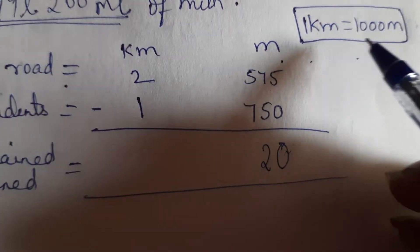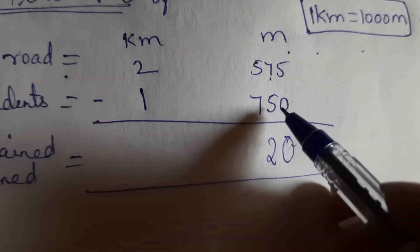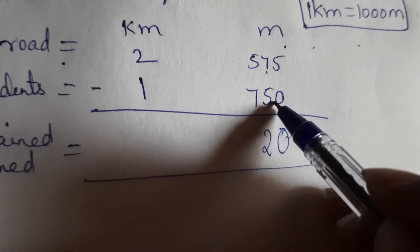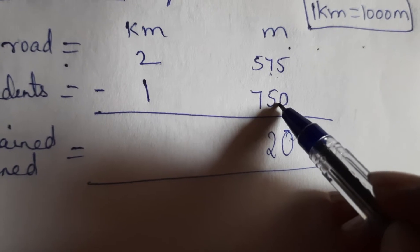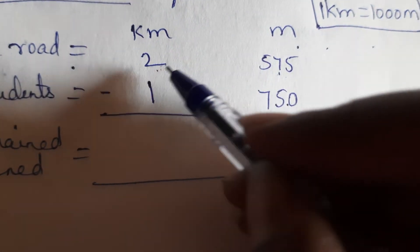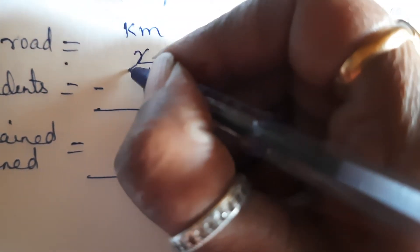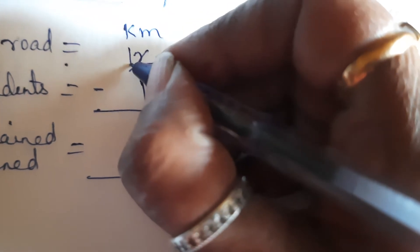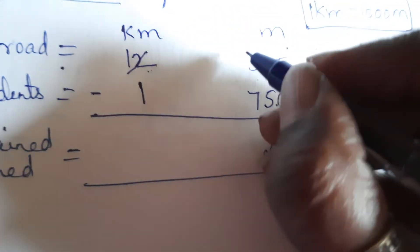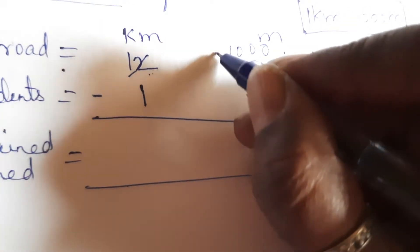Sorry children. 1 kilometer 1000 meter. Now see, 575 meter from here I cannot minus 750 meter. Correct. So I will have to borrow. I have to borrow from the kilometer. So kilometer will give me 1 kilometer which is 1000 meters. Okay.